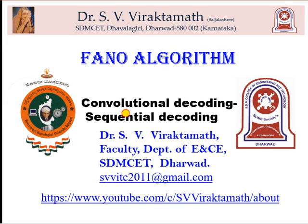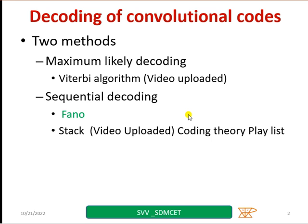Basically, it is convolutional decoding, and in that it is sequential decoding. There are two methods for convolutional decoding. One is maximum likelihood decoding, the Viterbi algorithm, which we have already uploaded. And in sequential, we have two types: one is stack algorithm and there is Fano.